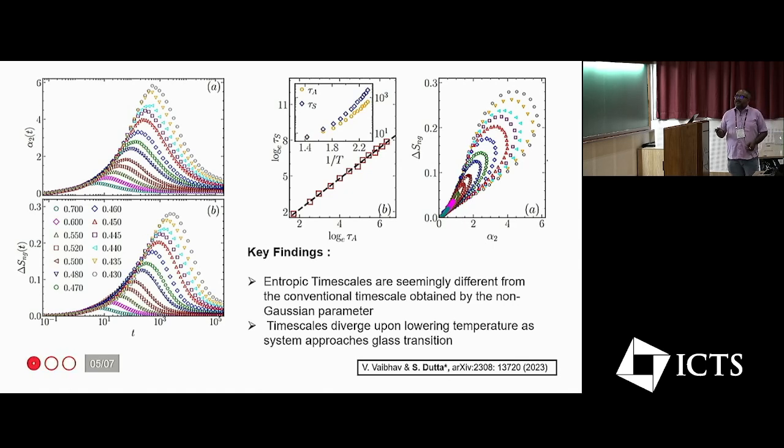Which shows that for high temperature, the difference is very minimal. And as we are approaching to the low temperature states and we are approaching the glass transition, the difference keeps on increasing and they are diverging.